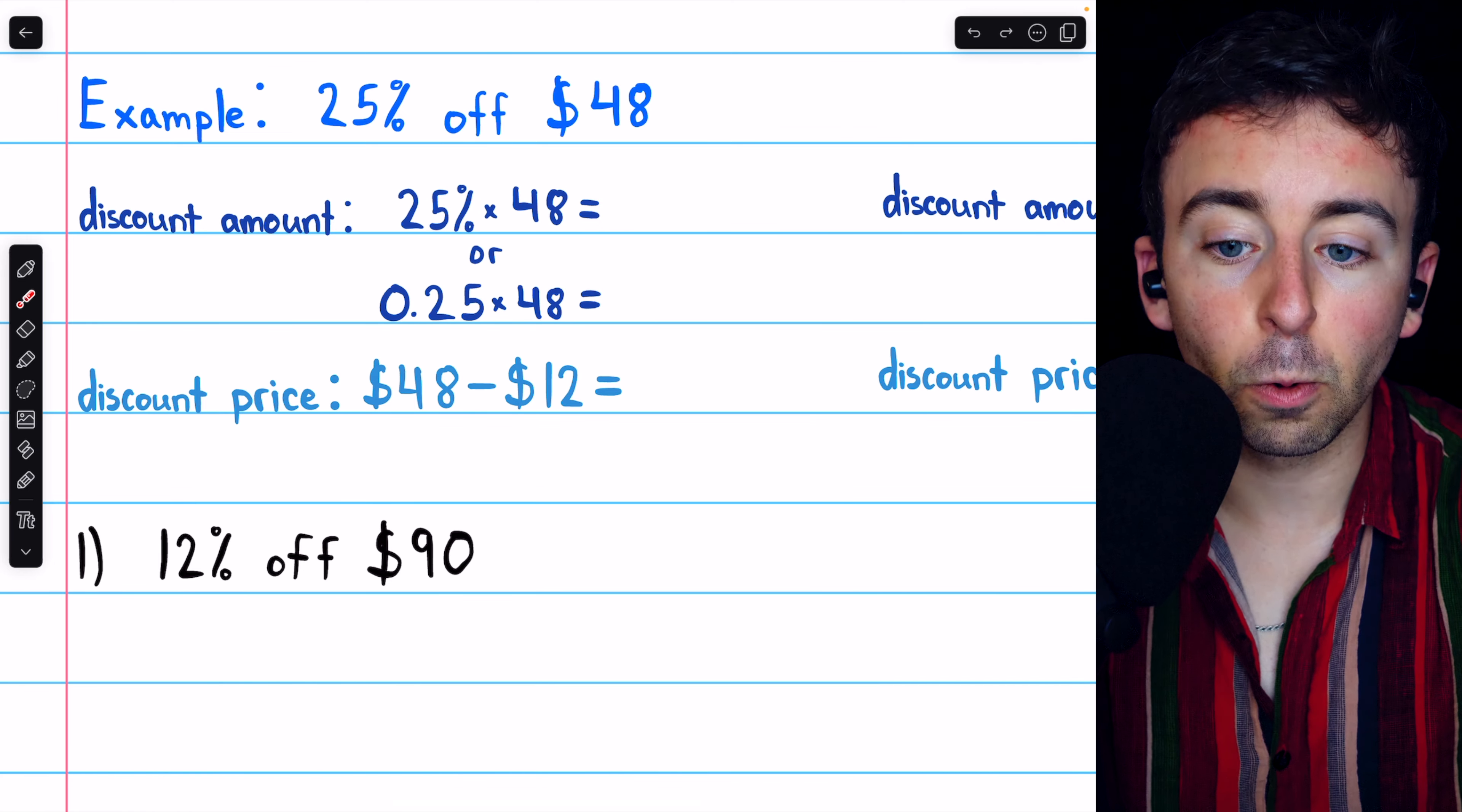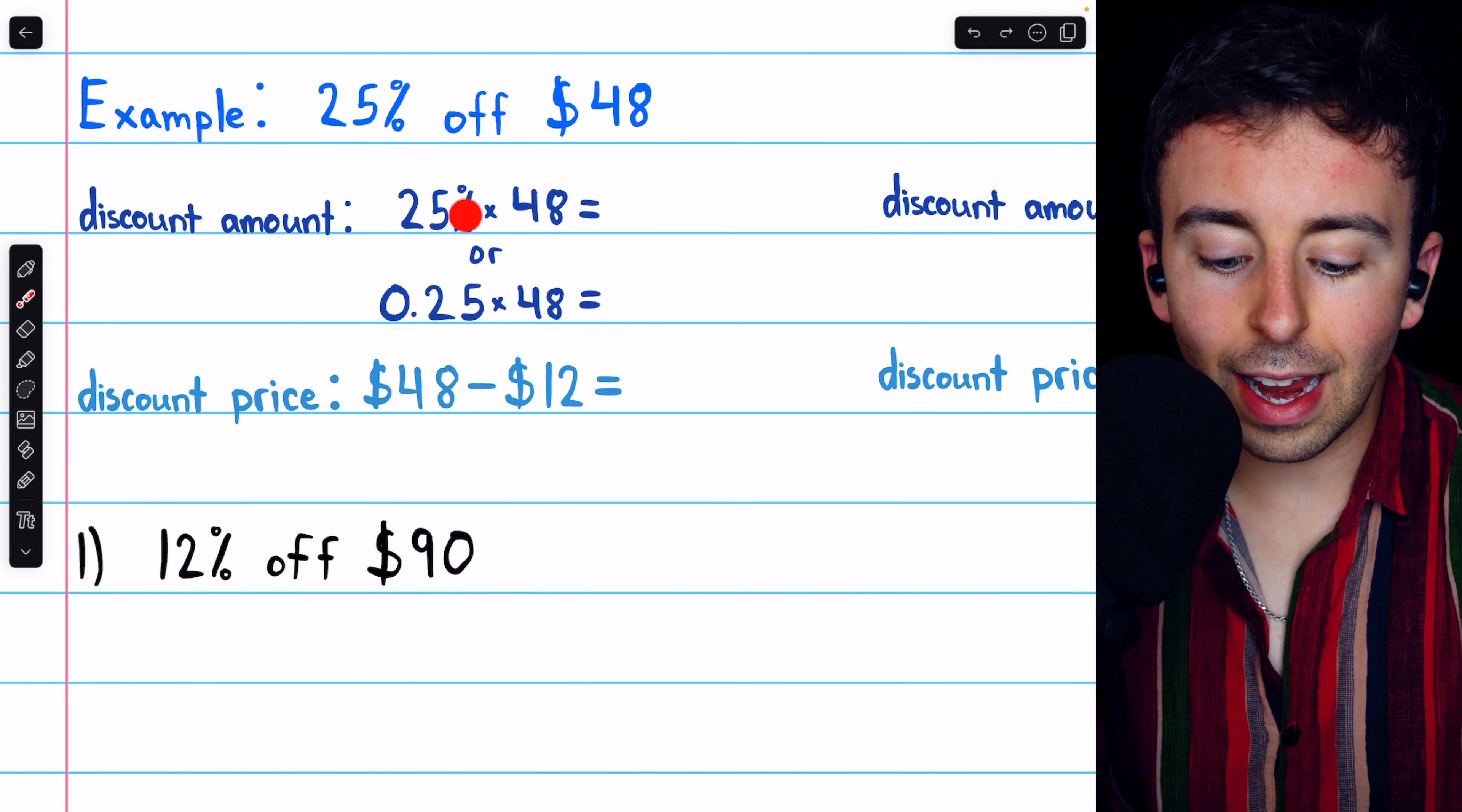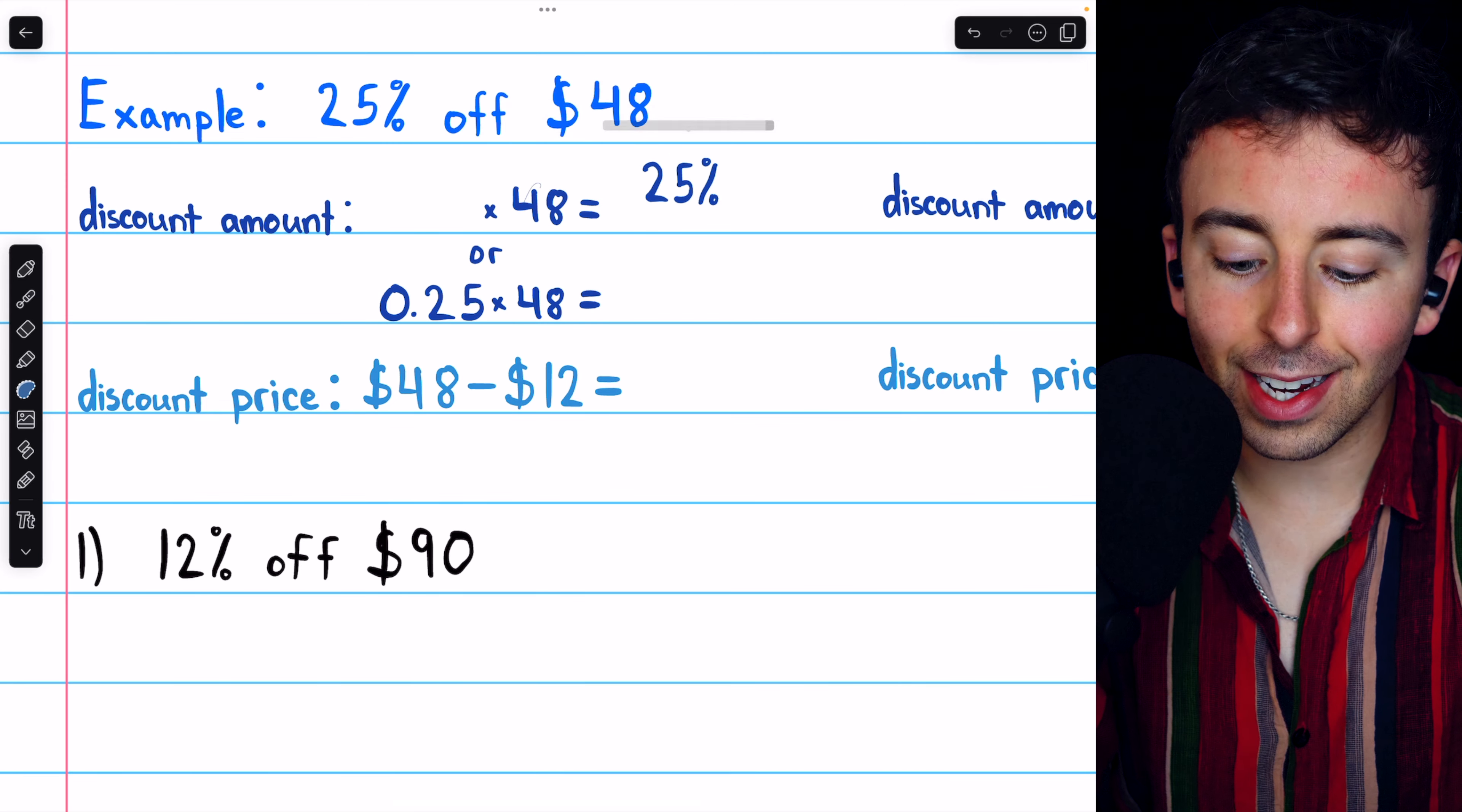25%, the discount rate, times 48, the original cost. And if you have a calculator with a percent key, you can actually just punch this into the calculator, although you have to put the percent last.